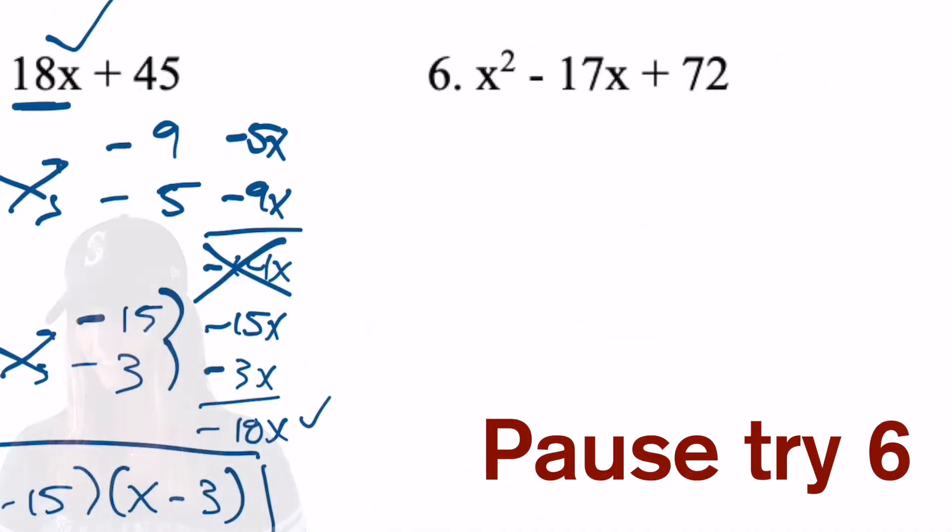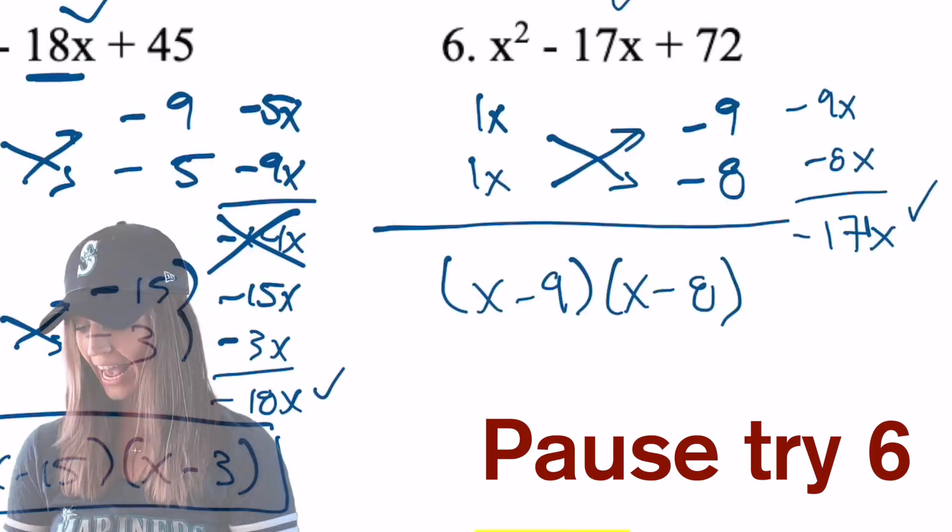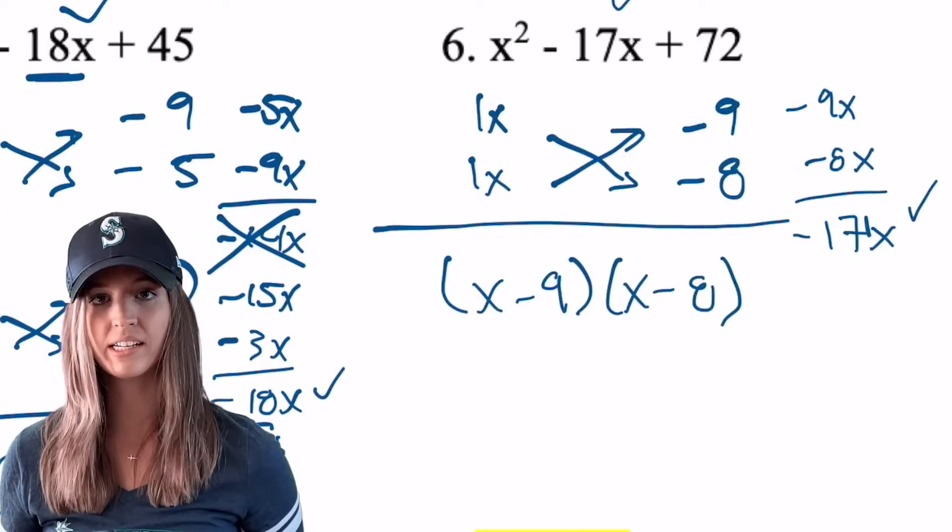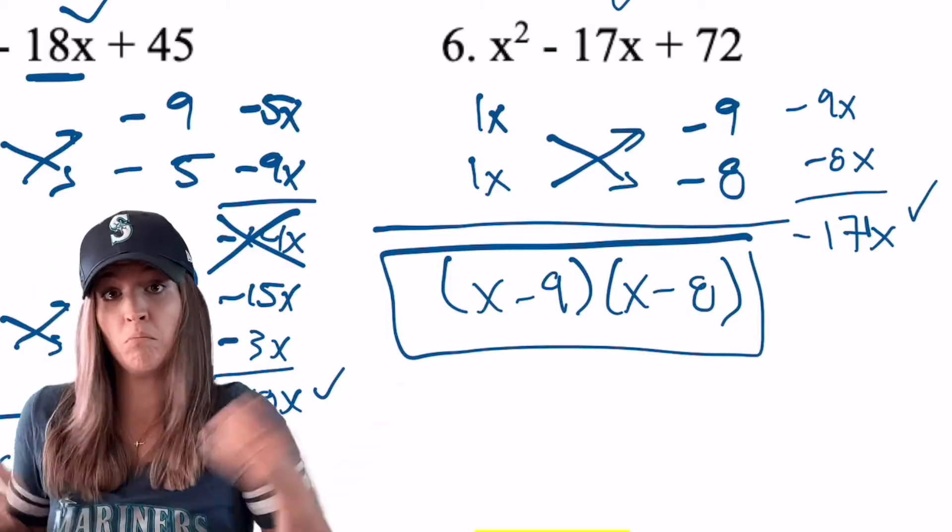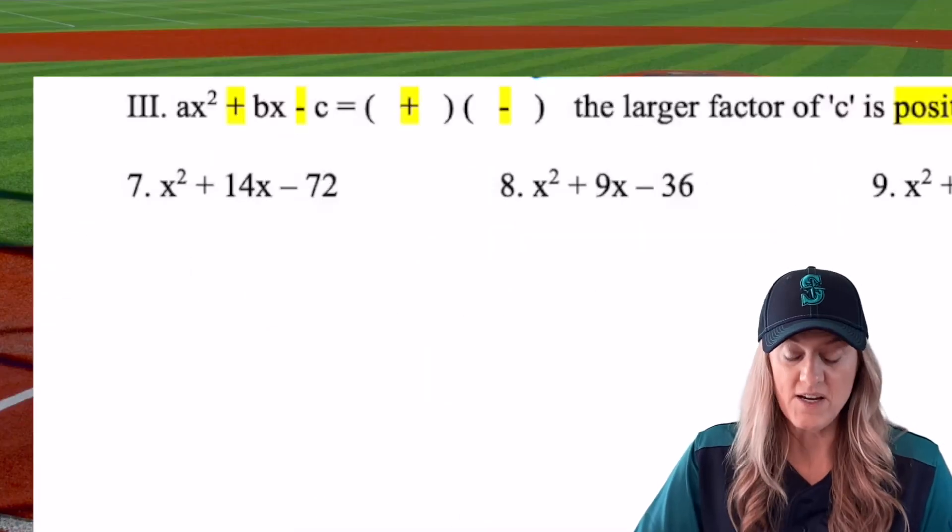So even if it doesn't work the first time, we can just try a different two factors and check like we did here. Go try 6. I got x minus 9 times x minus 8 as my factored form. If you got x minus 8 times x minus 9, those are equivalent.